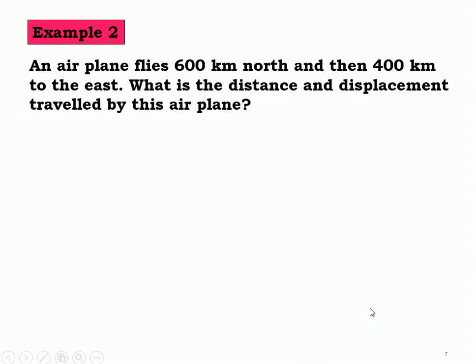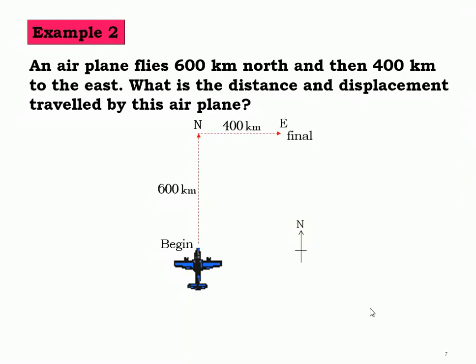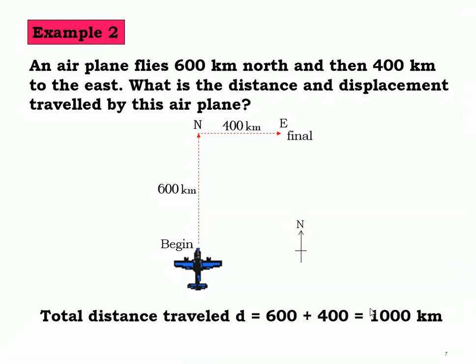Let's look at another example. An airplane flies 600 kilometers north, then 400 kilometers to the east. What is the distance and displacement traveled by this airplane? Looking at the diagram: it moves straight up 600 kilometers north, then 400 kilometers east. The total distance traveled by the airplane is 600 plus 400, which equals 1000 kilometers. But for displacement, we need the shortest straight line from initial to final position.